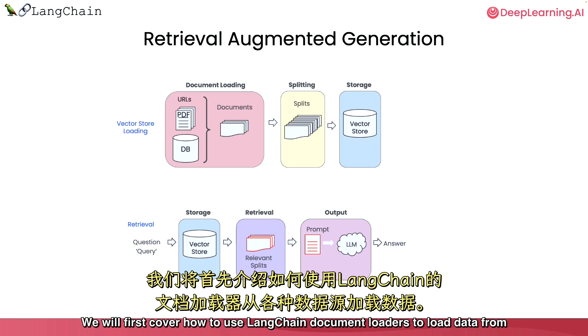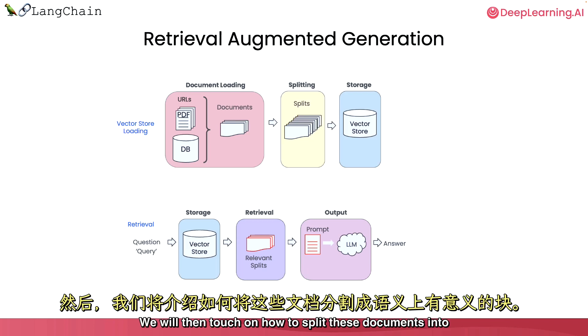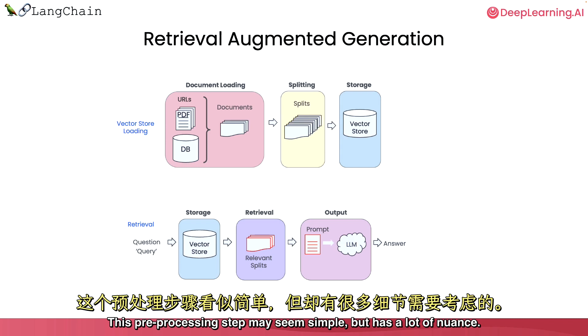We will first cover how to use Langchain document loaders to load data from a variety of exciting sources. We will then touch on how to split these documents into semantically meaningful chunks. This preprocessing step may seem simple, but has a lot of nuance.